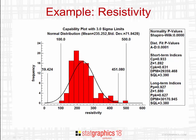You also see a lot of calculated capability indices: CP, Z, CPK, DPM, SQL, and also the long-term indices. Unfortunately, these rely on the assumption of normality, so they mean nothing for this data.